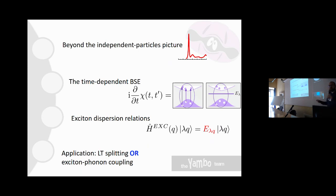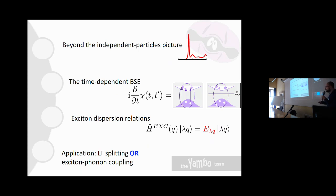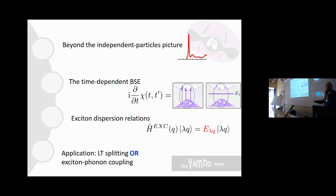We also have an advanced topic. We don't have time for two, so we'll select one by vote — raise your hand at the end. The possibilities are longitudinal-transverse splitting of excitons or exciton-phonon coupling. During the talk, think about which one you want to see.